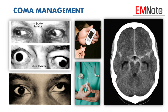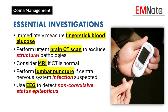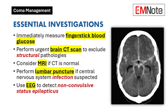So those first few minutes — ABCs, GCS, pupils, and the finger stick glucose — set the stage for everything else. Now we put on our detective hats and really try to figure out what's going on. We've stabilized the patient and gotten some initial information; now it's time to dig into the underlying cause of the coma.